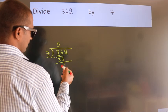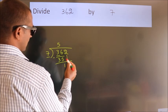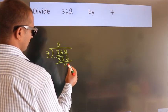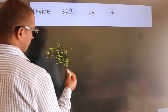After this, bring down the beside number. So 2 comes down, giving us 12.